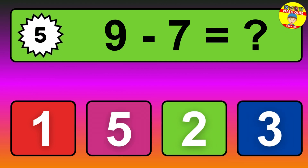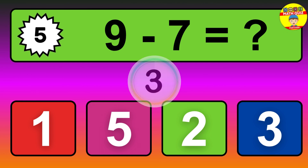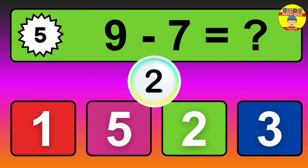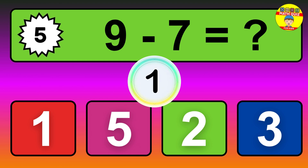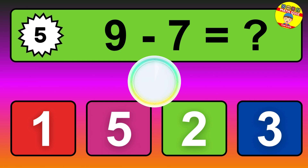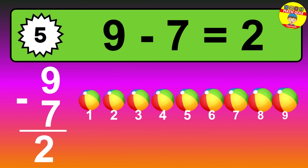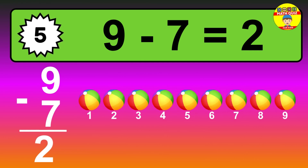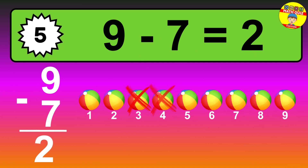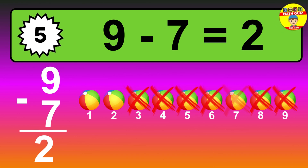Question five: nine minus seven equals what? The answer is nine minus seven is two. Let's count it: one, two.